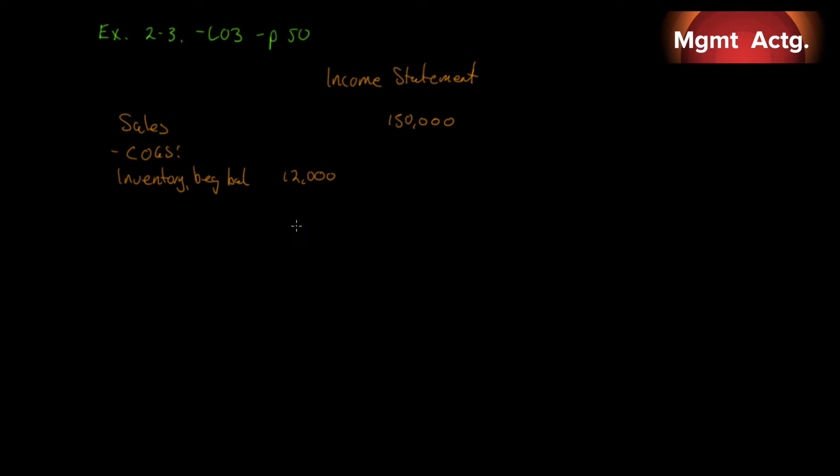So, we'll put $12,000 here. Whenever we're doing sub-calculations, we don't want to continue on the same line. We kind of indent it a bit, and then once we get the number we want, we'll extend it out. So, there's our inventory beginning balance. To that, we will add, what do we add? Right, our purchases. And we're told that our purchases were $90,000.